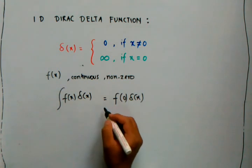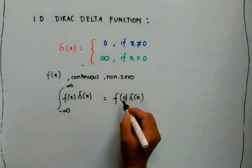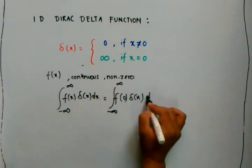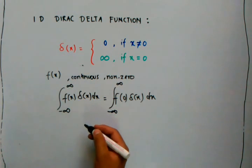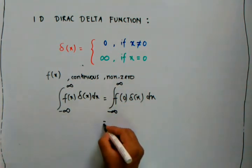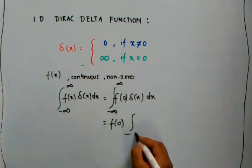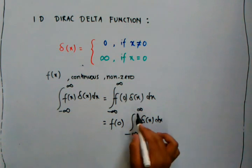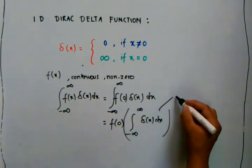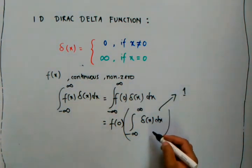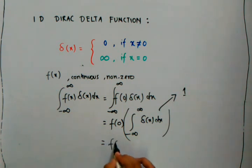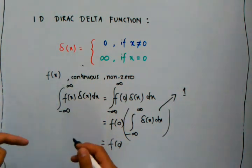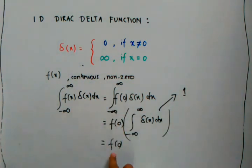If we integrate this product from minus infinity to infinity, f(0) simply comes out because it's a constant, and we are left with the integration of the Dirac delta function, which is simply equal to one — because it gives us the area. Therefore, the result is f(0). So when we integrate the product of any function with the Dirac delta function, we get the function evaluated at zero.